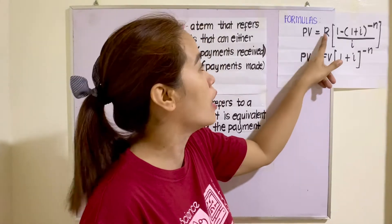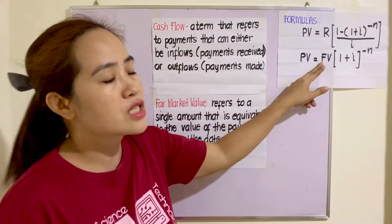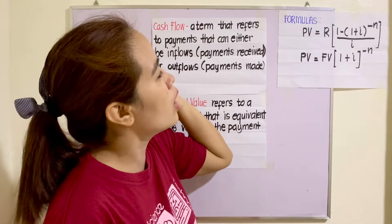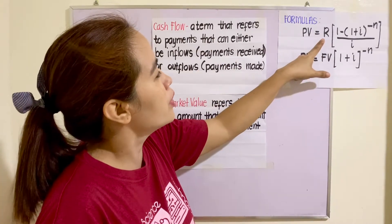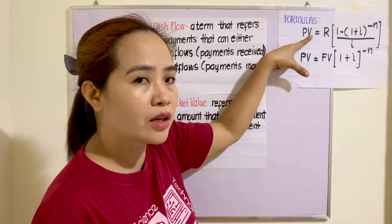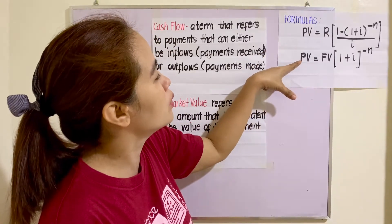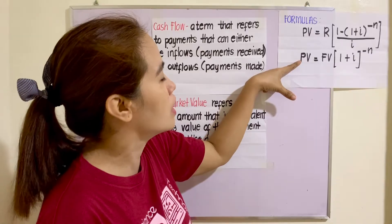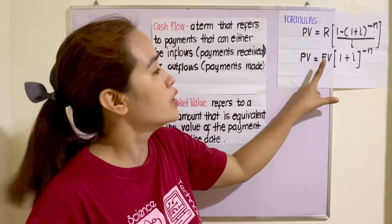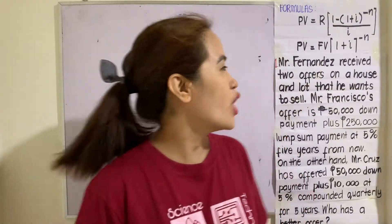We will be using two formulas. PV stands for present value, R is the periodic payment, and MV is the future value. If you are given the periodic payment, you will use the first formula to find the present value. If the future value is given, you will use the second formula.